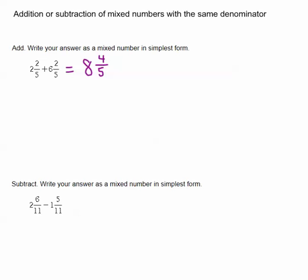4 fifths cannot be reduced, it's already in simplest form. So 8 and 4 fifths is our answer.